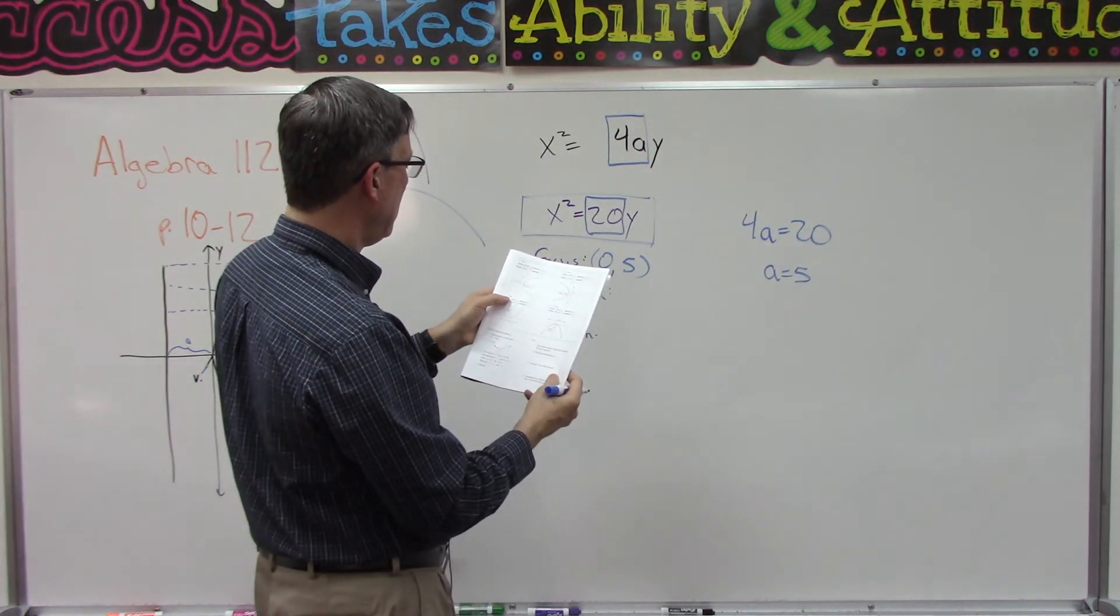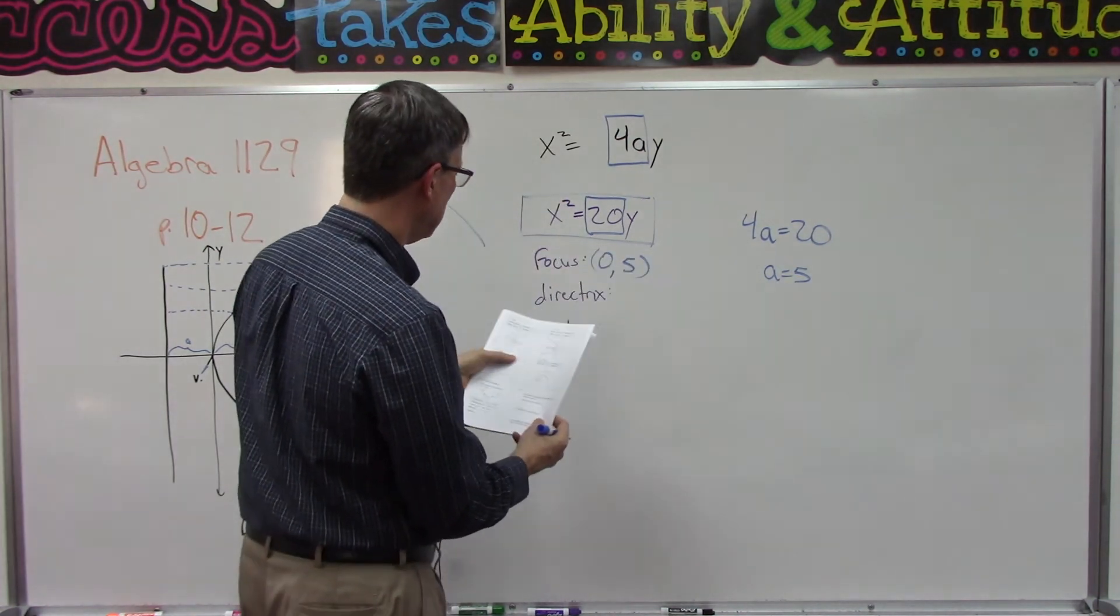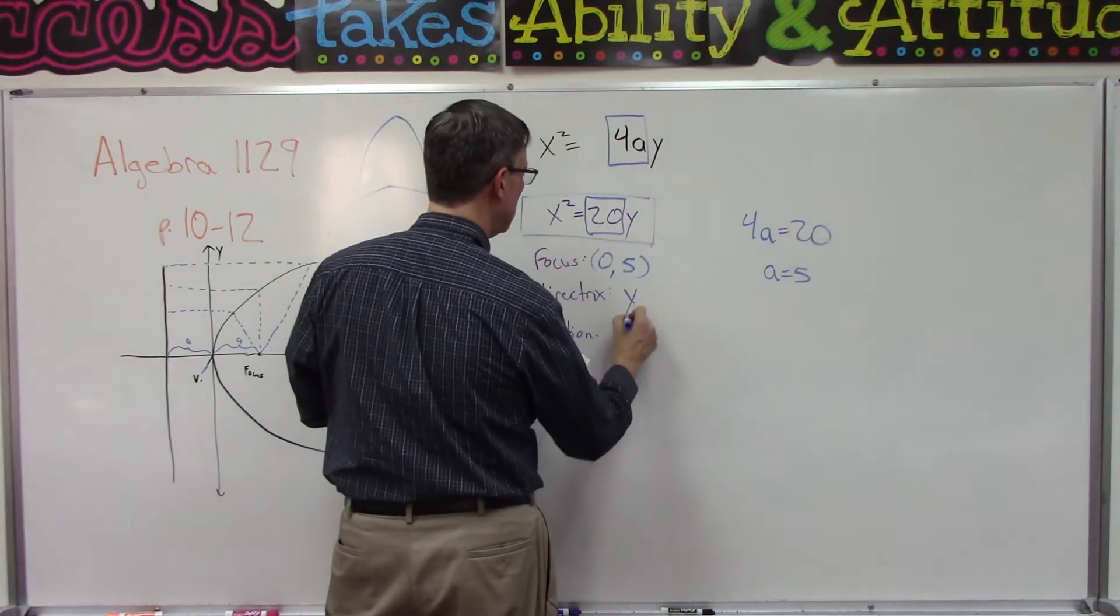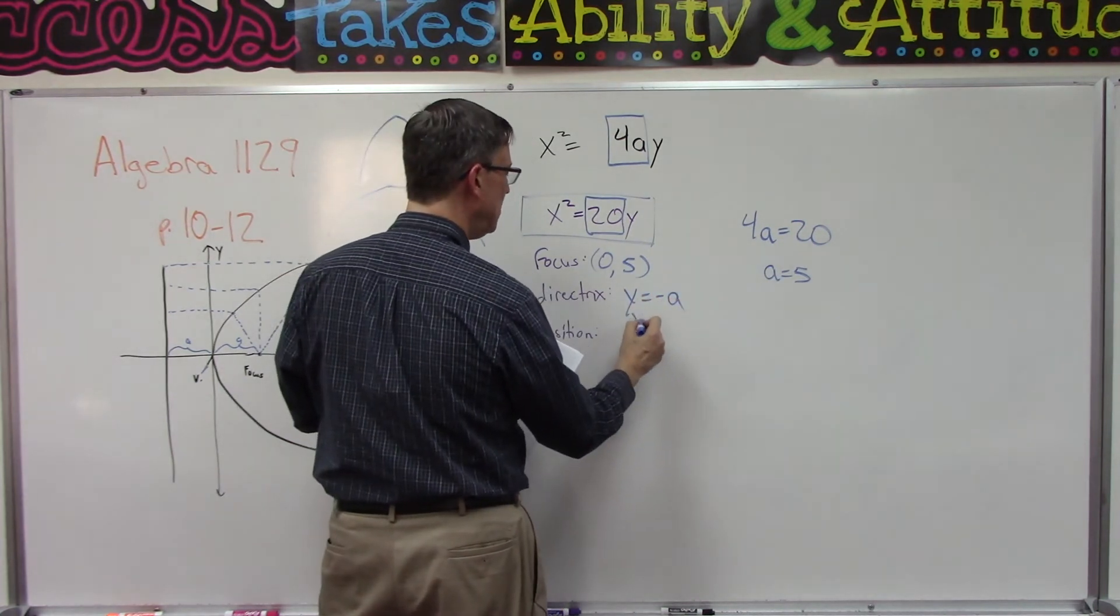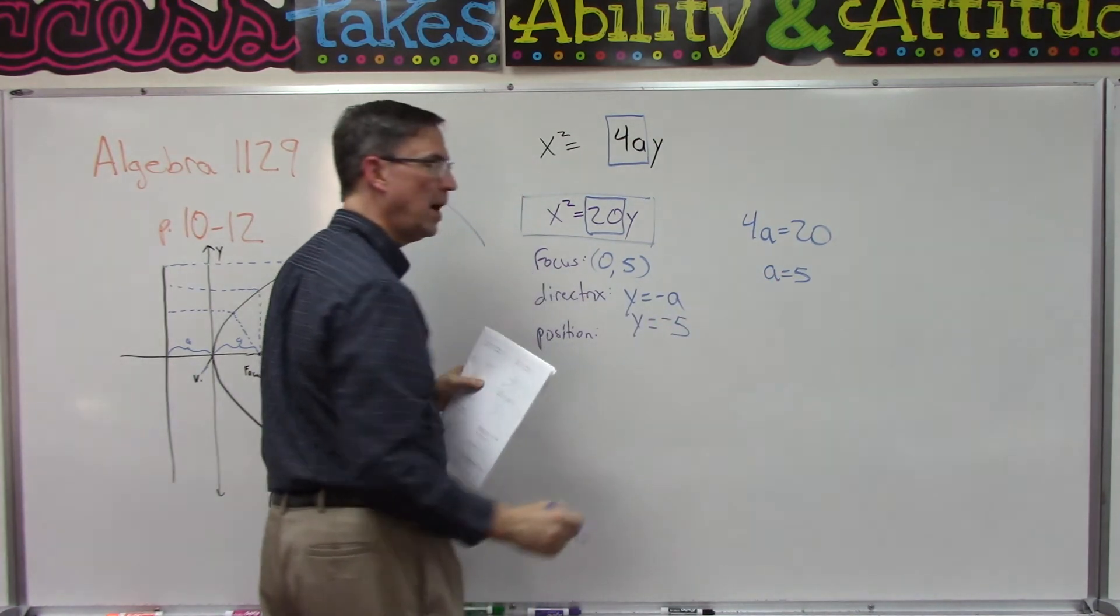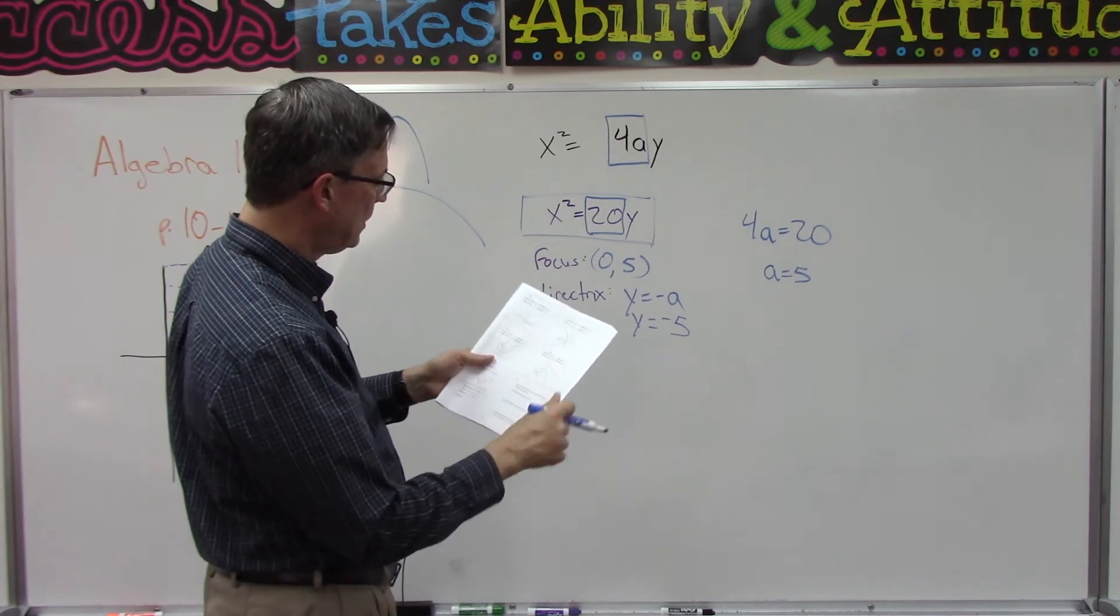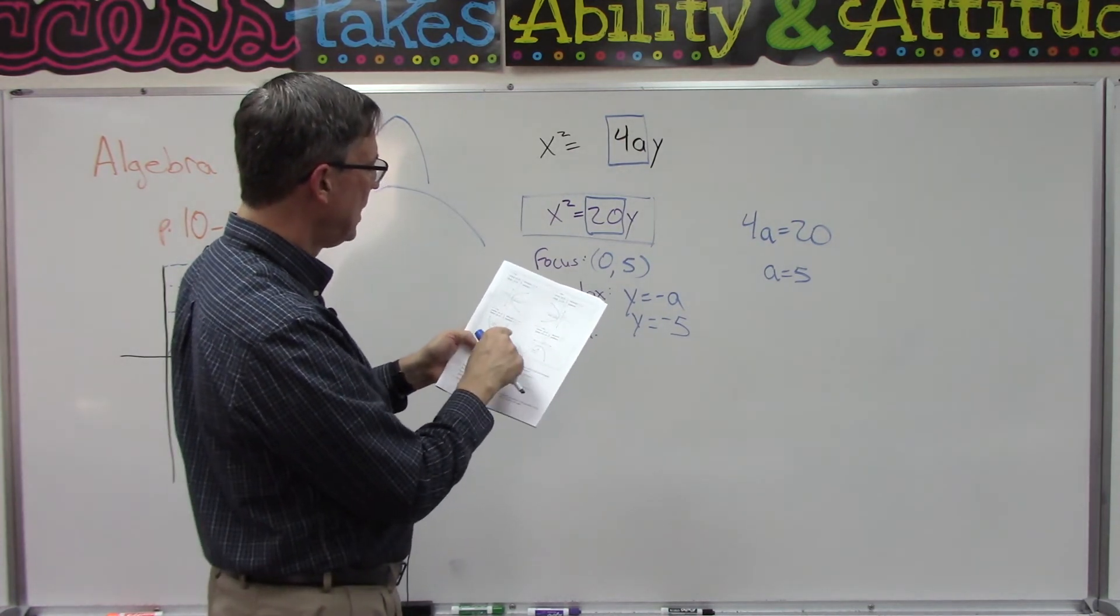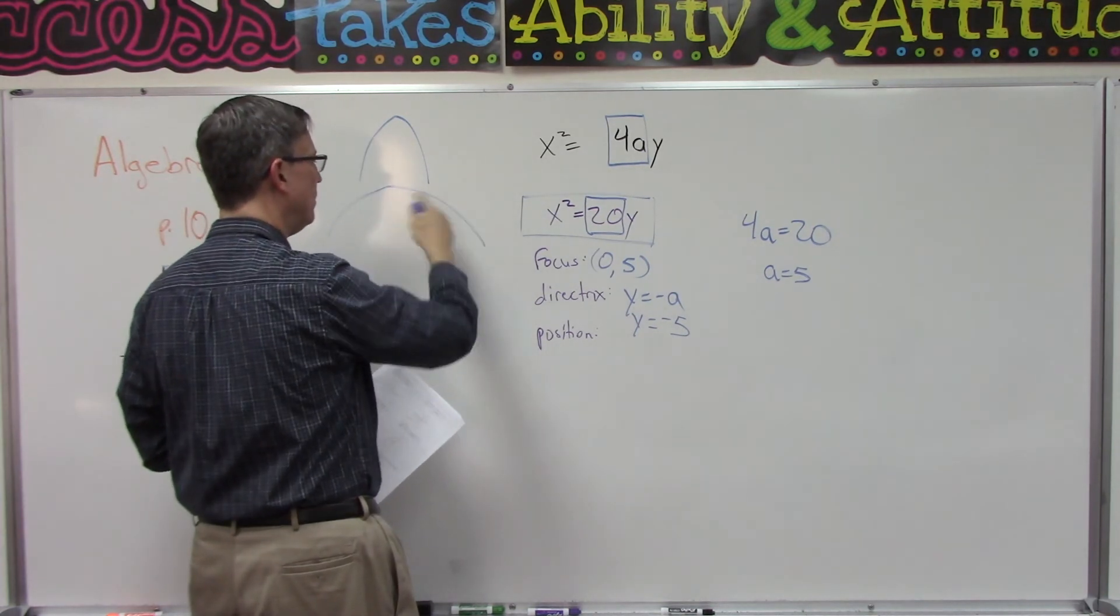So the focus is zero comma and then whatever the a value is, so we just calculated that to be 5. I'm following the pattern here, number three. So it says the directrix is y equals negative a, so that must mean I'm going to have y equals negative 5.